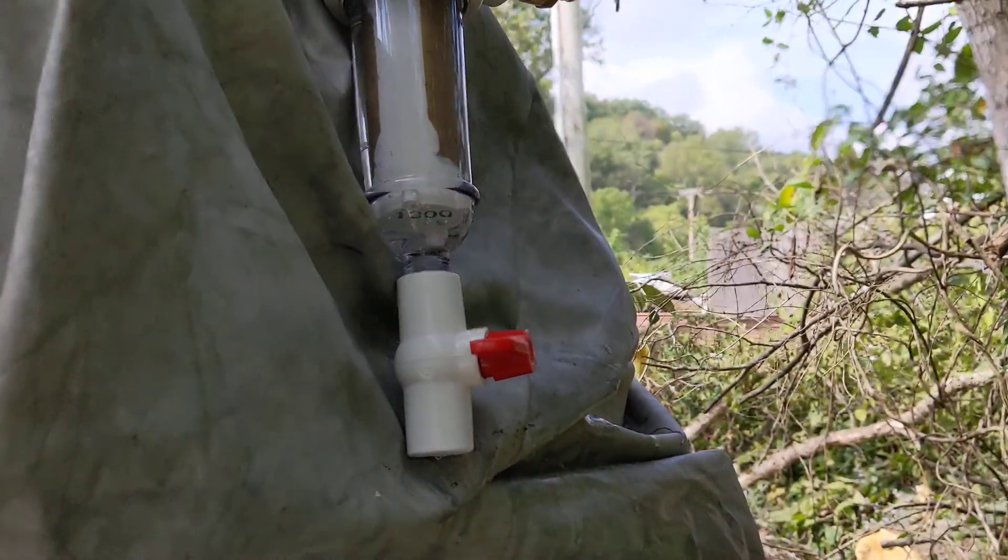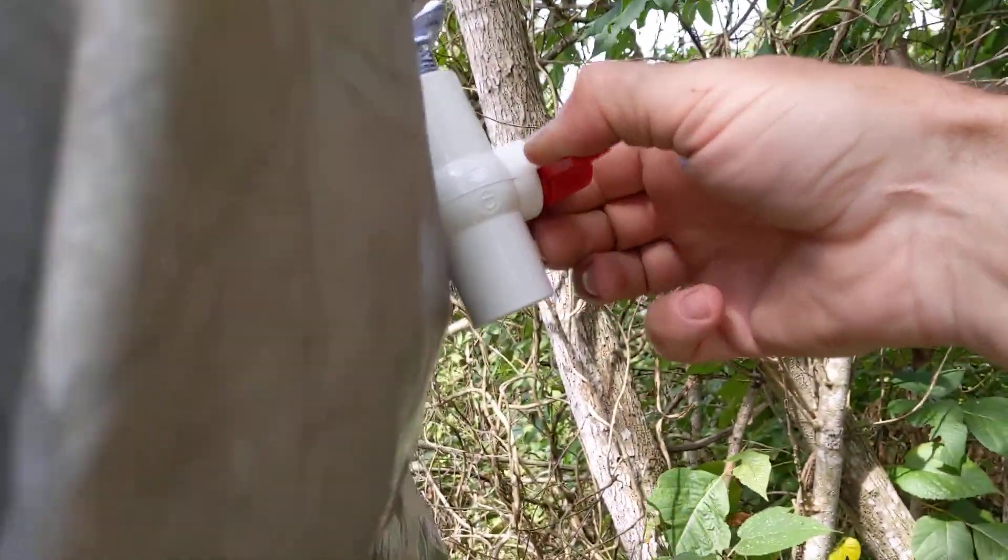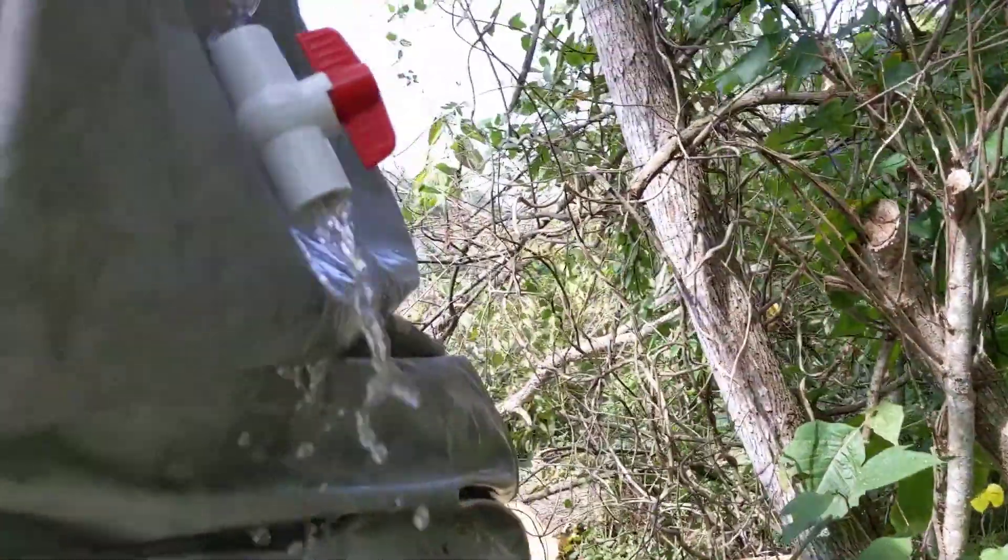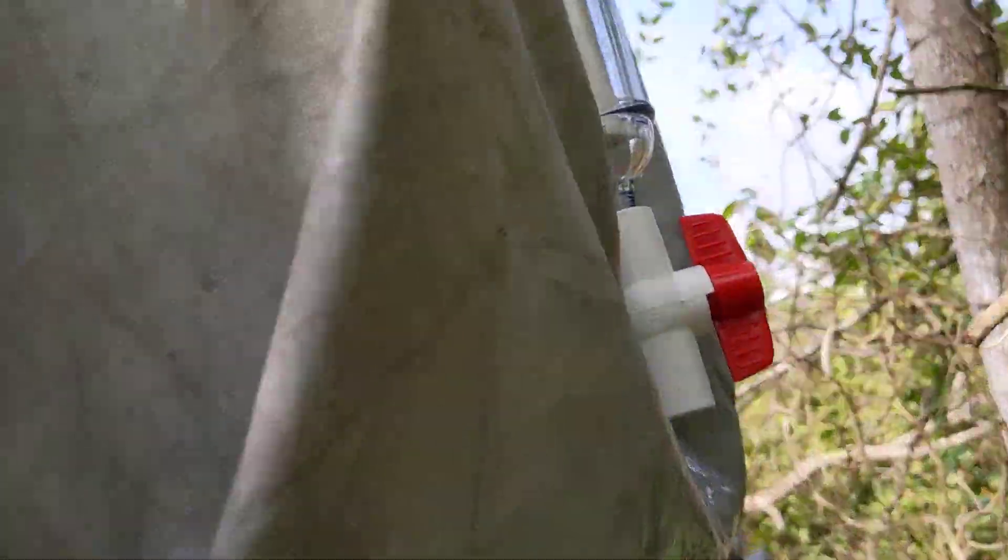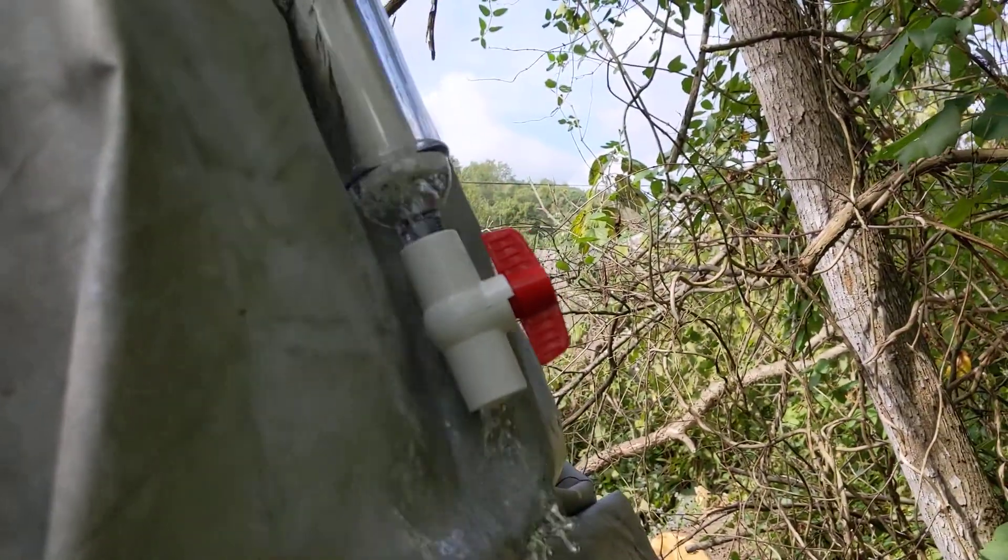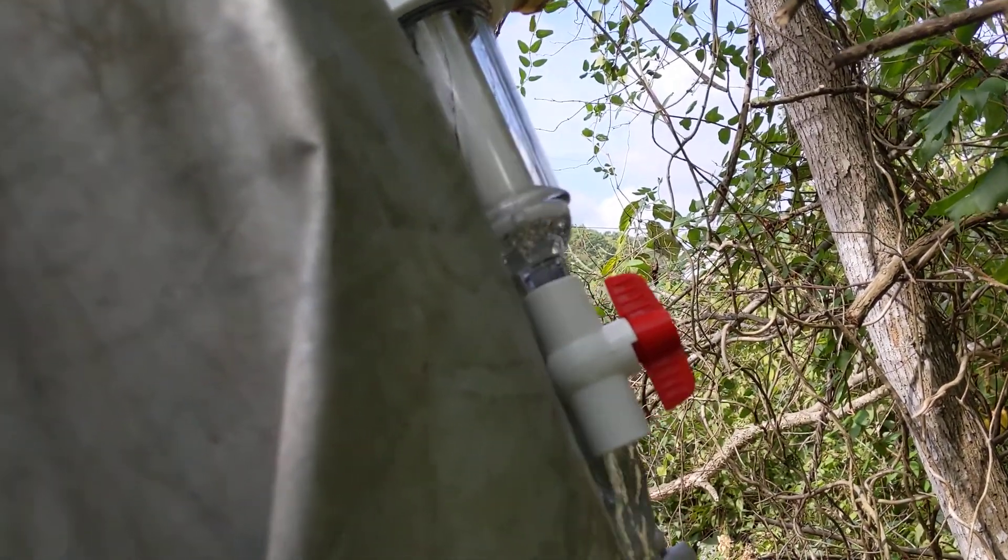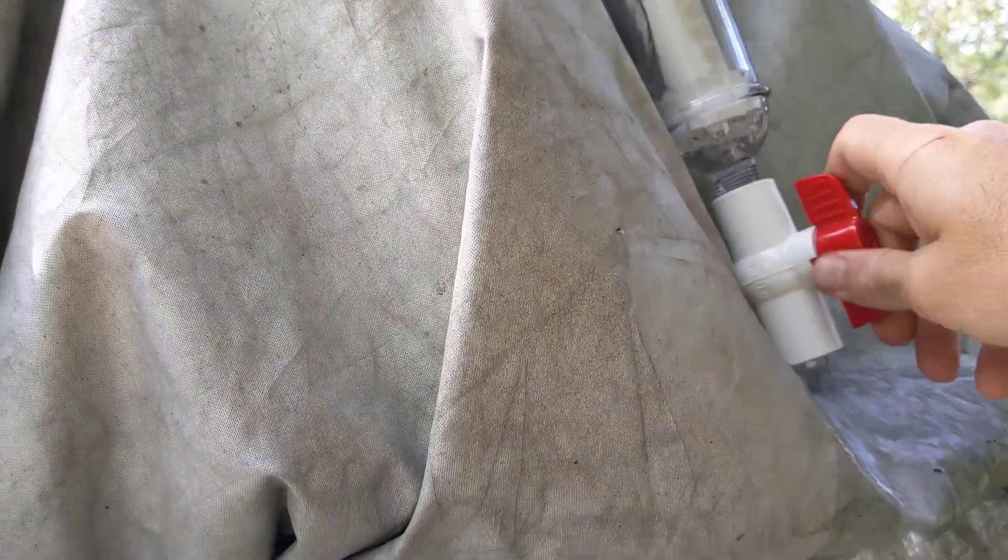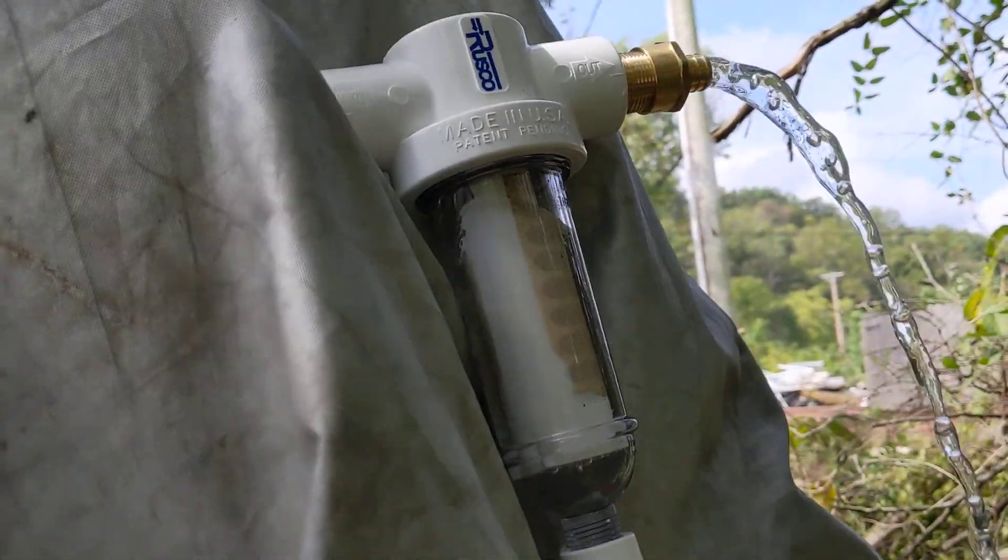All right, so this particular filter has a - I'm going to try to do this without getting it all over me - purge valve on it. Oh, you know what? I turned it off, so I'll turn it back on. I'm washing it out. I'm going to figure out a way to backflush it. All right, now we can turn it back on and we got water again.